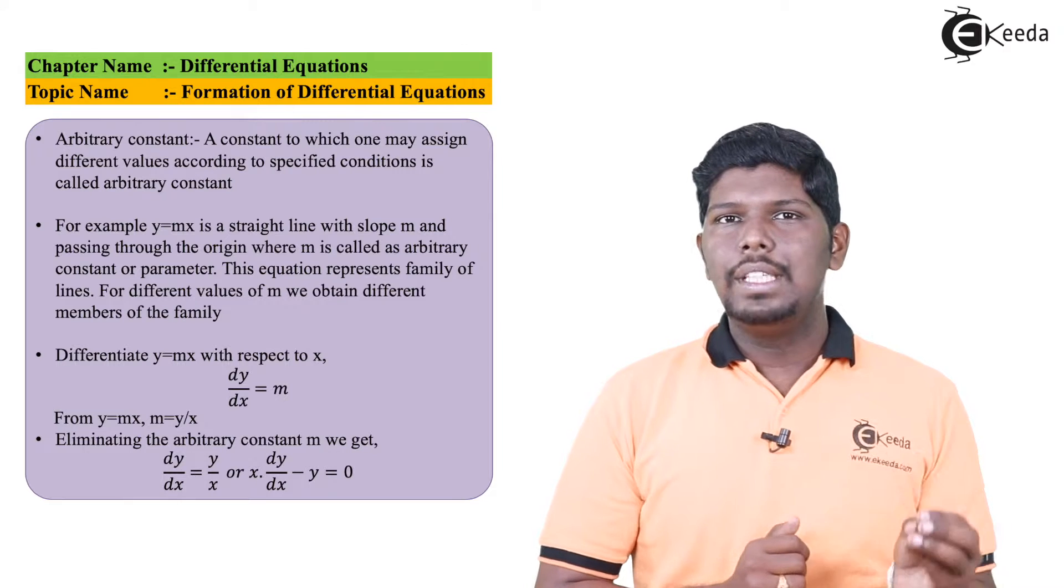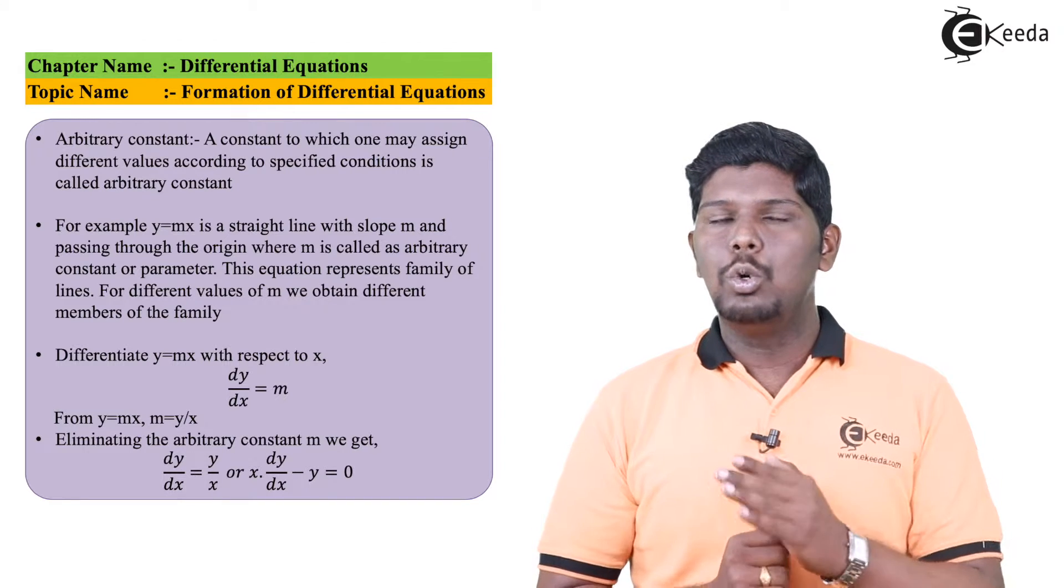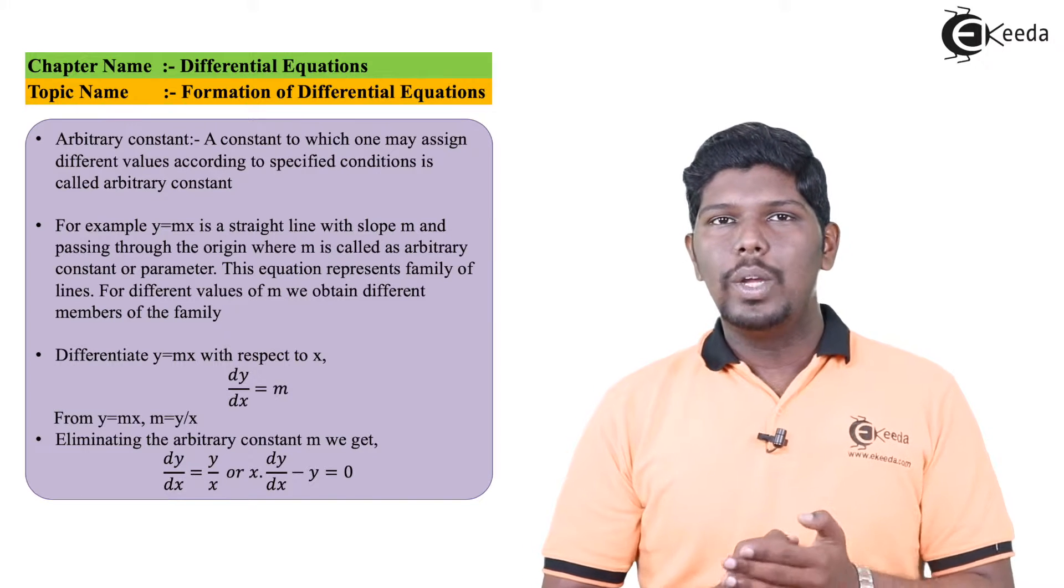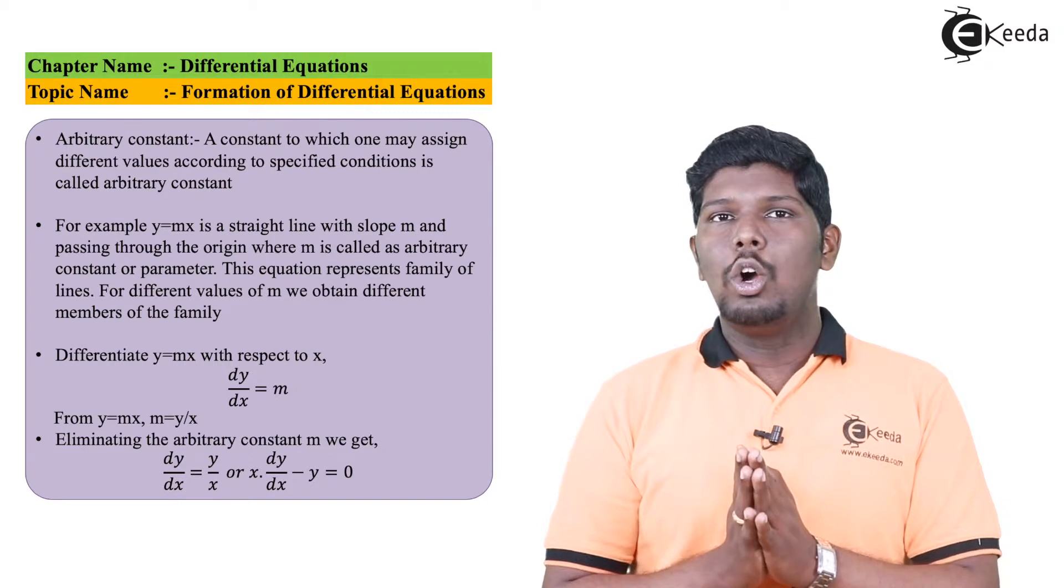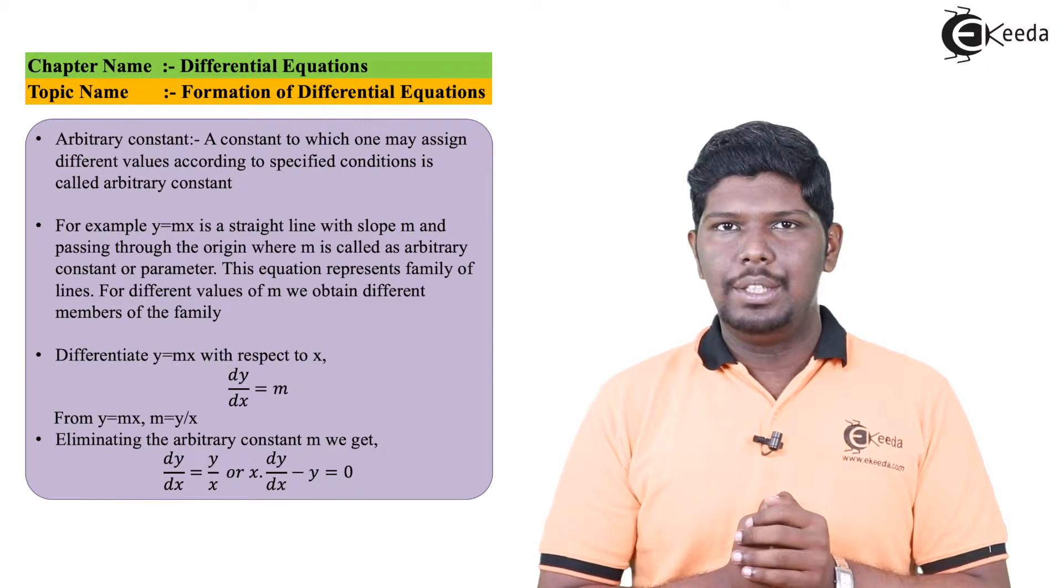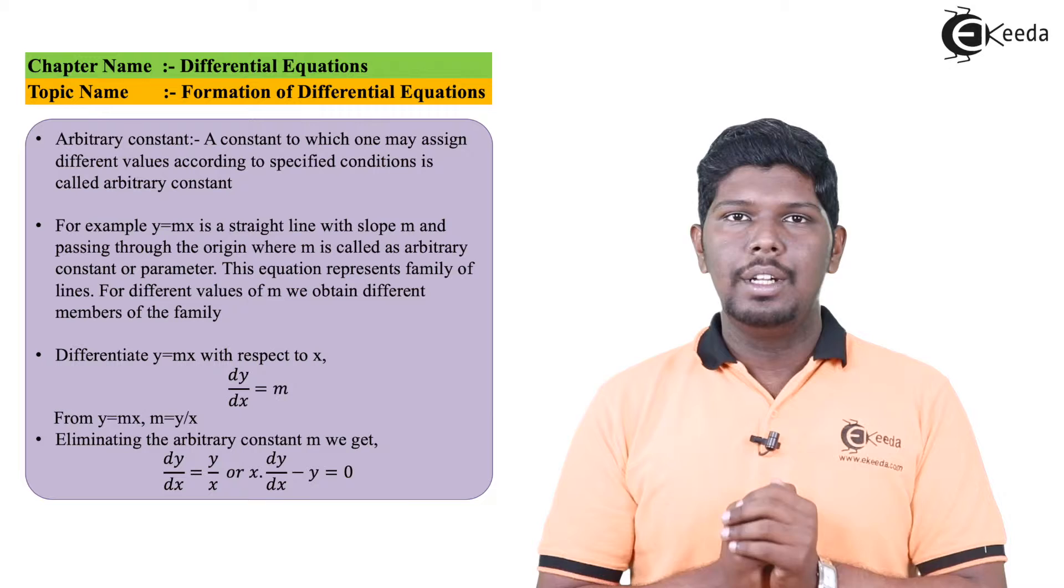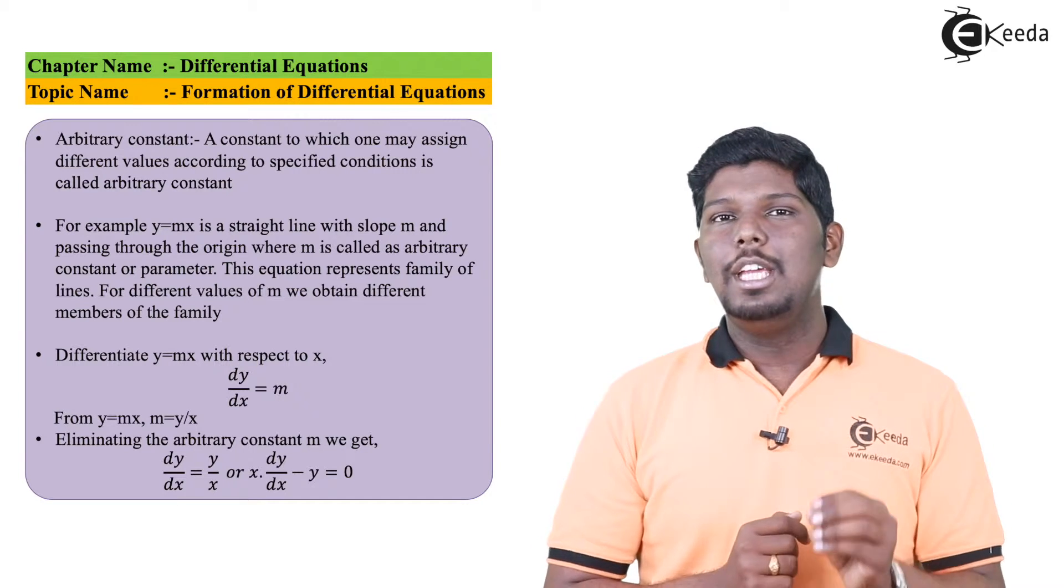So here you can see the values of m will change for different types of lines. If I say y equals x, this line will pass through the origin making an angle of 45 degrees. Similarly, if I say y equals 2x or y equals 3x, the behavior of the line or the inclination will change. So in this case, m is a slope of the line which is a constant, but more specifically m is called an arbitrary constant.